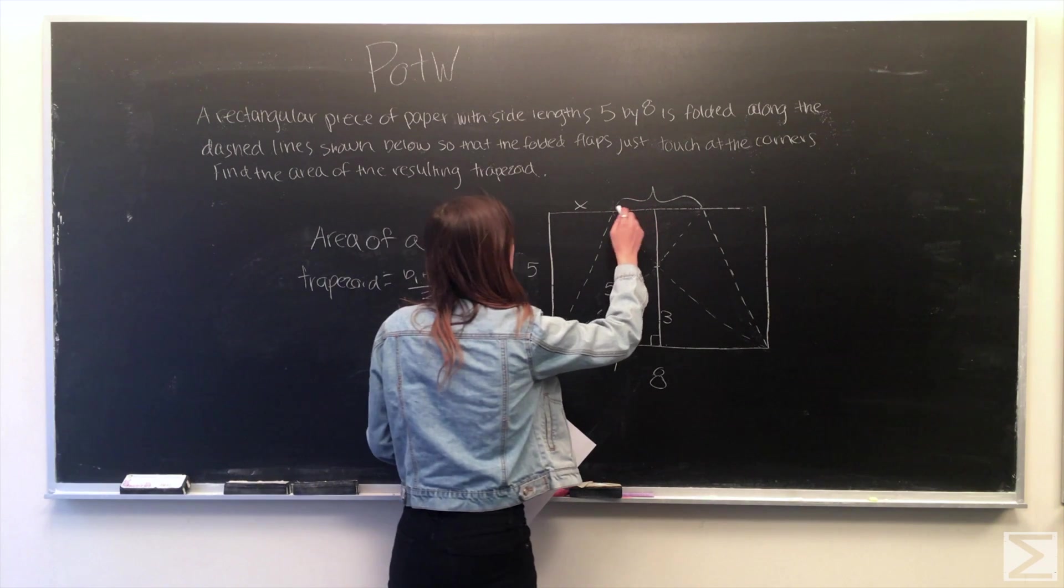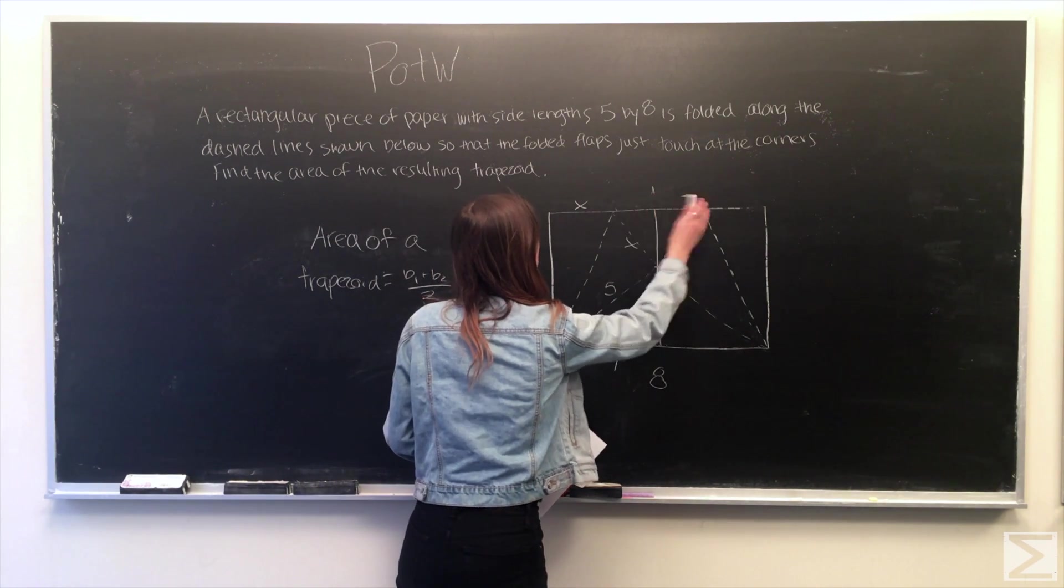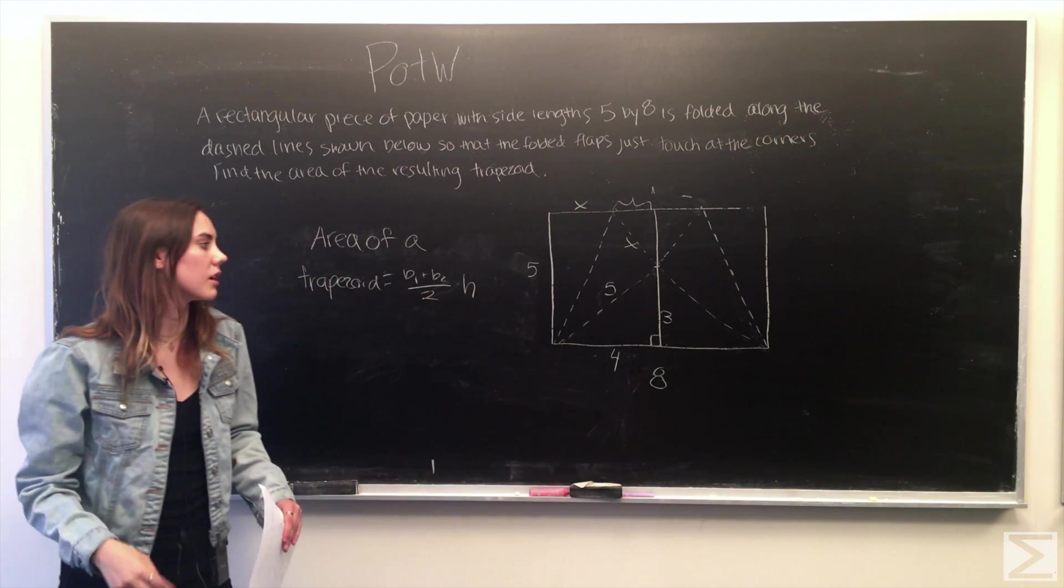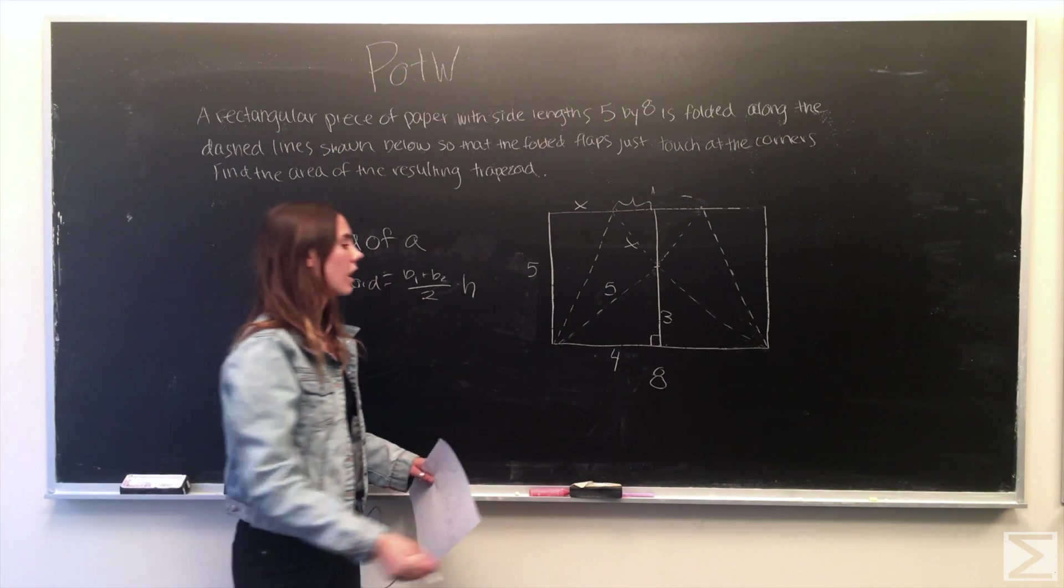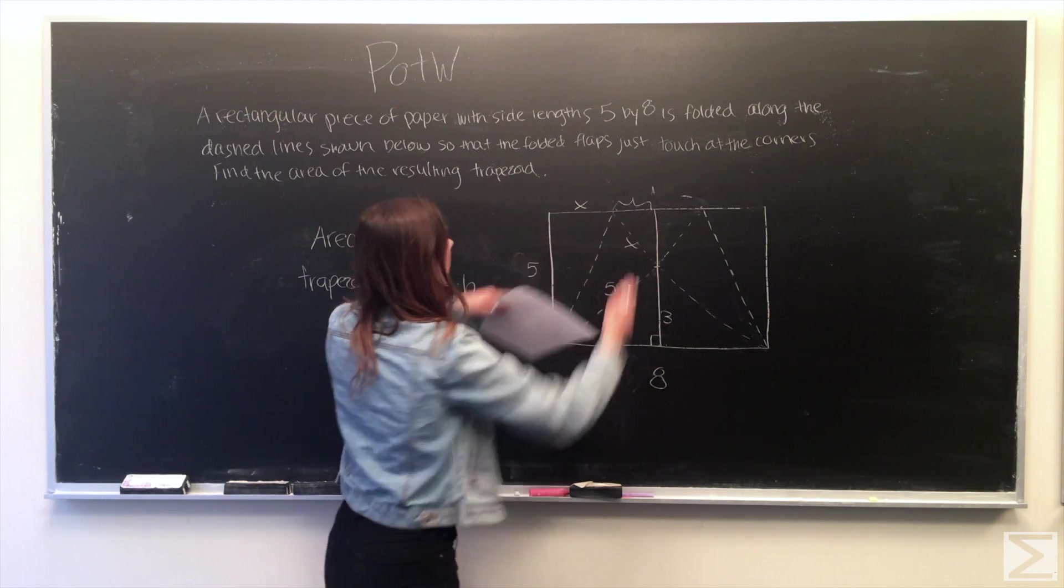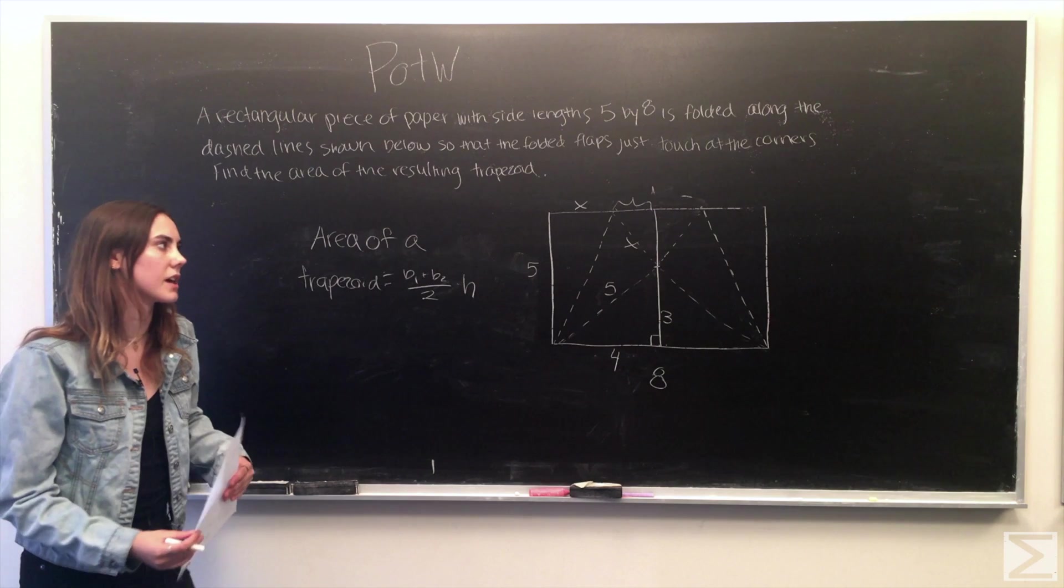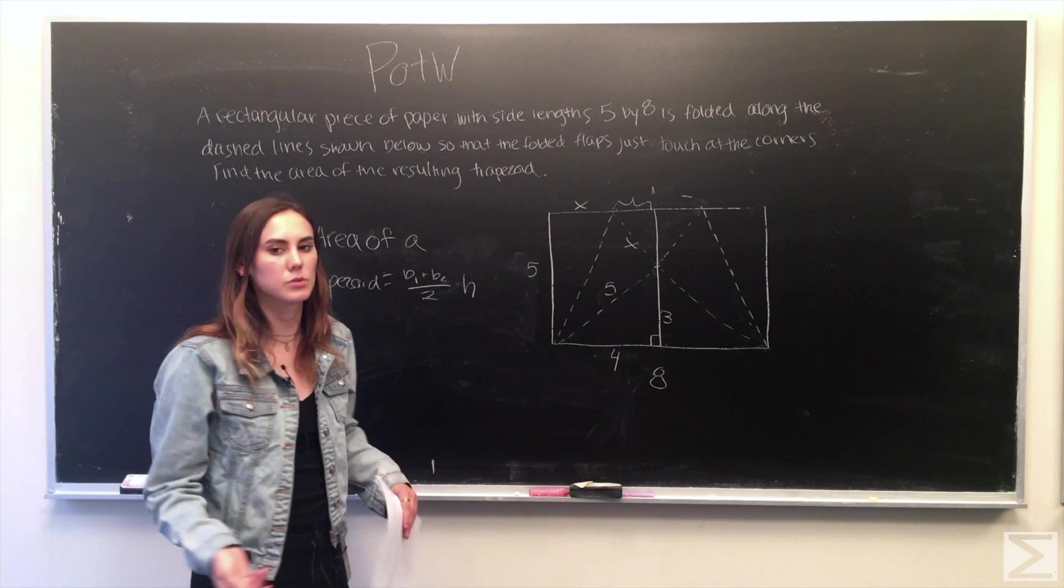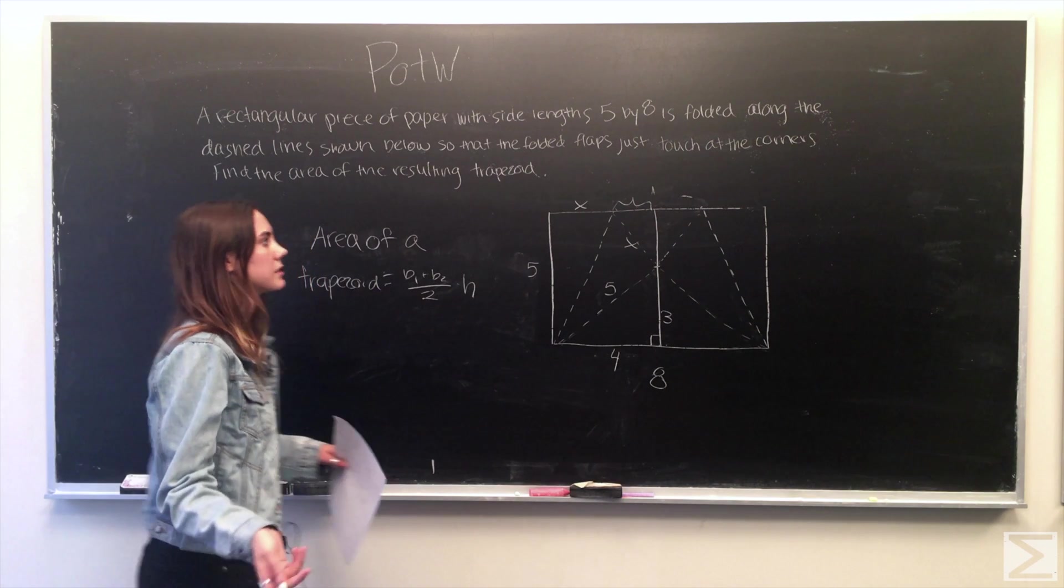We know that this area is actually equal to 4 minus X just based off of the bisection here. We know that this is 4 and so that half of the base has to be 4 minus X. Then we can use the Pythagorean theorem to solve for what half of the base is equal to.